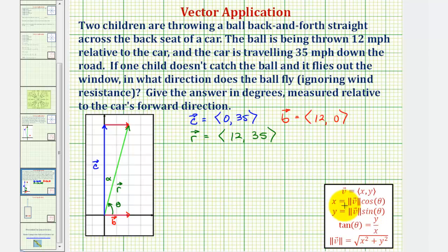To find angle theta, we could use the equation tangent theta equals y divided by x or 35/12. If we take inverse tangent of both sides, theta would equal inverse tangent of 35/12.